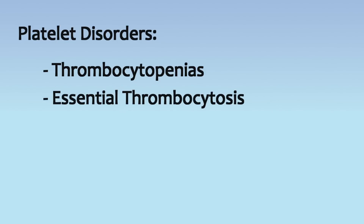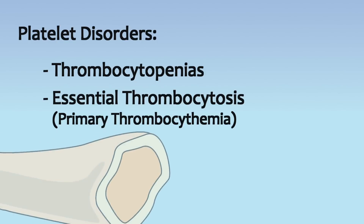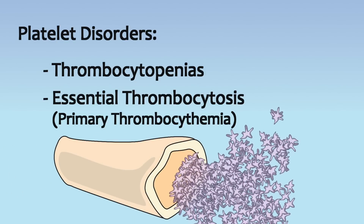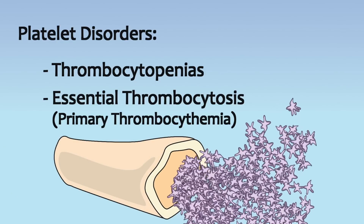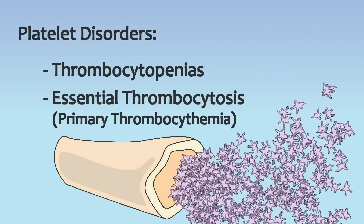Essential thrombocytosis, also known as primary thrombocytopenias, is a disorder characterized by the overproduction of platelets in the bone marrow, resulting in excessive clotting, bleeding, or both.